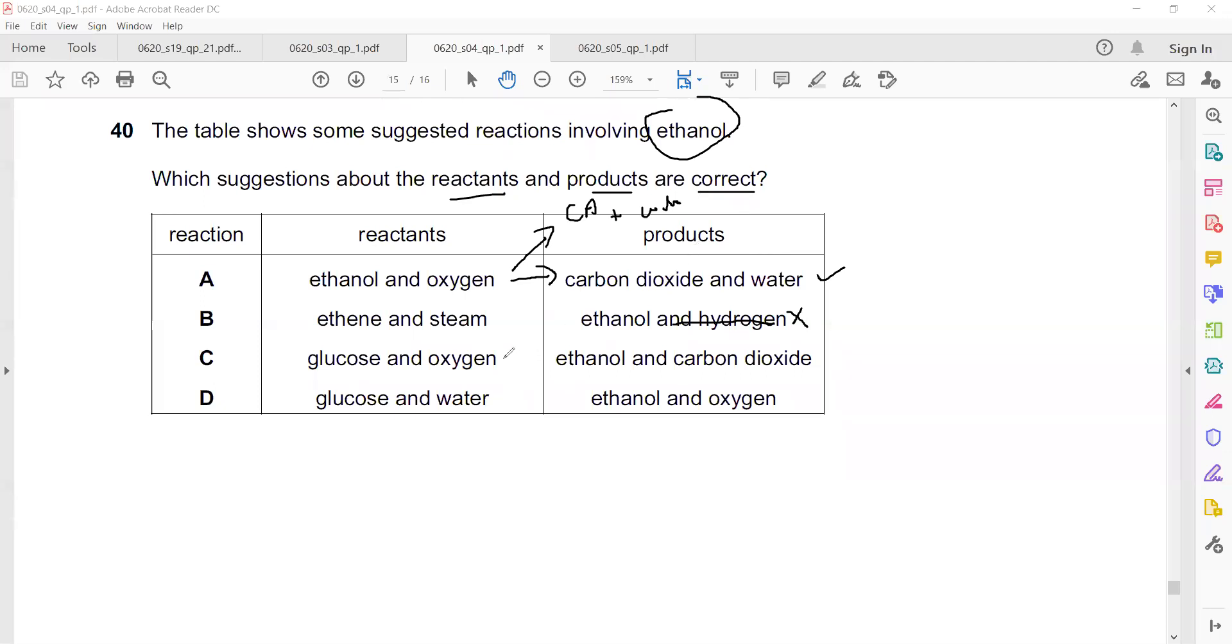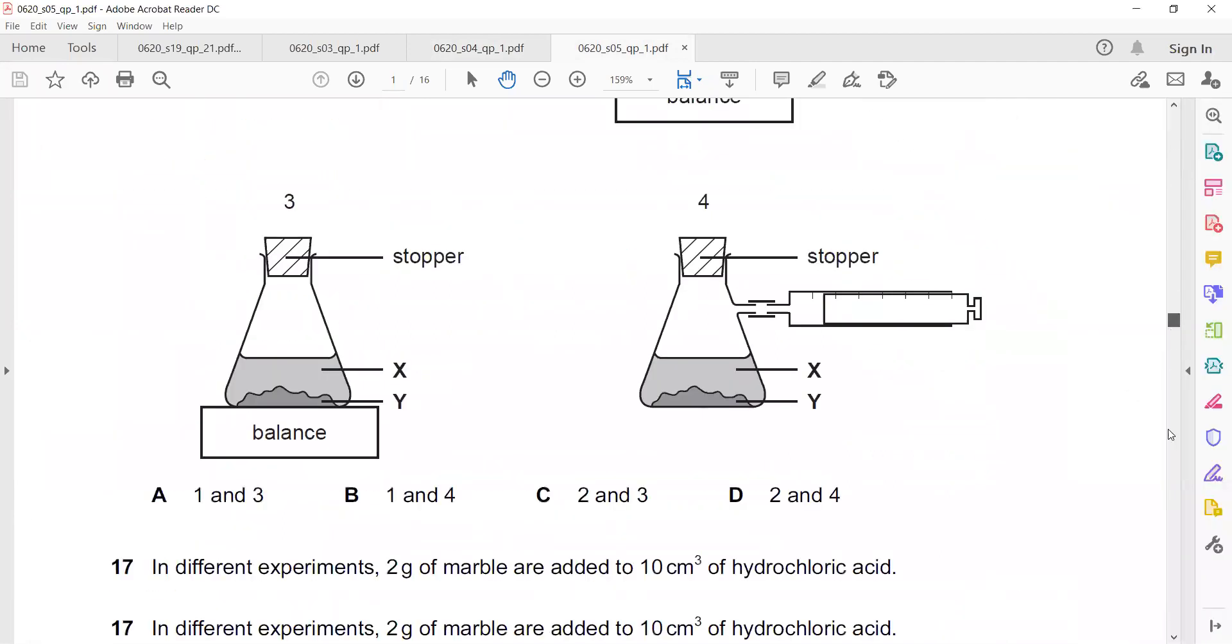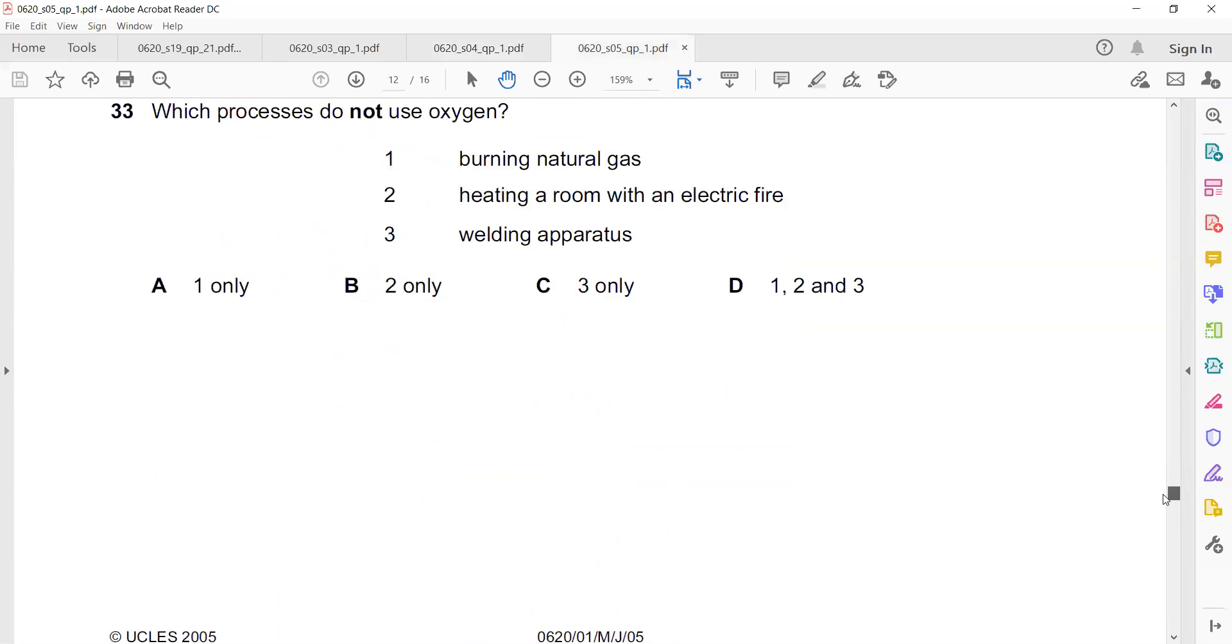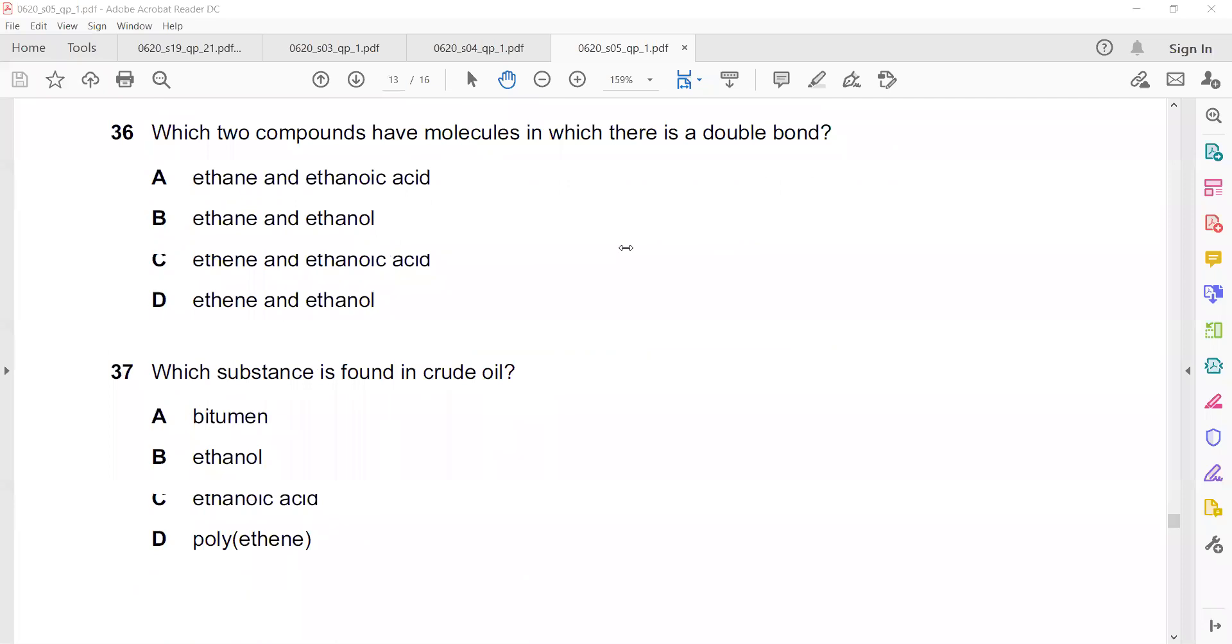Glucose plus oxygen, if glucose plus oxygen is there, that is respiration basically. So what it results in is it should result in water and carbon dioxide. But carbon dioxide is there, not ethanol, so that's why it is not correct. Glucose plus water means a sugar solution. It can form ethanol and carbon dioxide. That's called fermentation, but not oxygen. Is it clear? That's why A is the correct statement or equation compared to others.